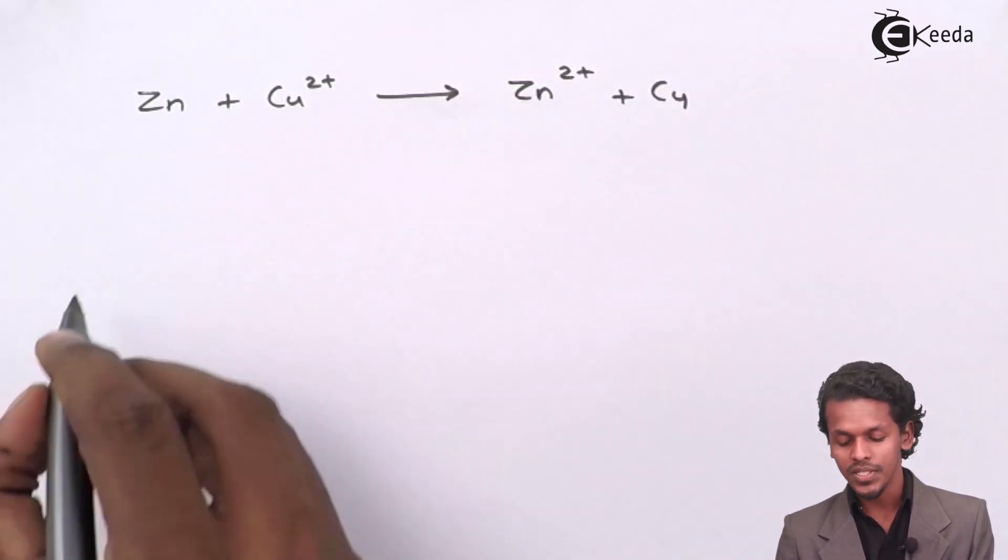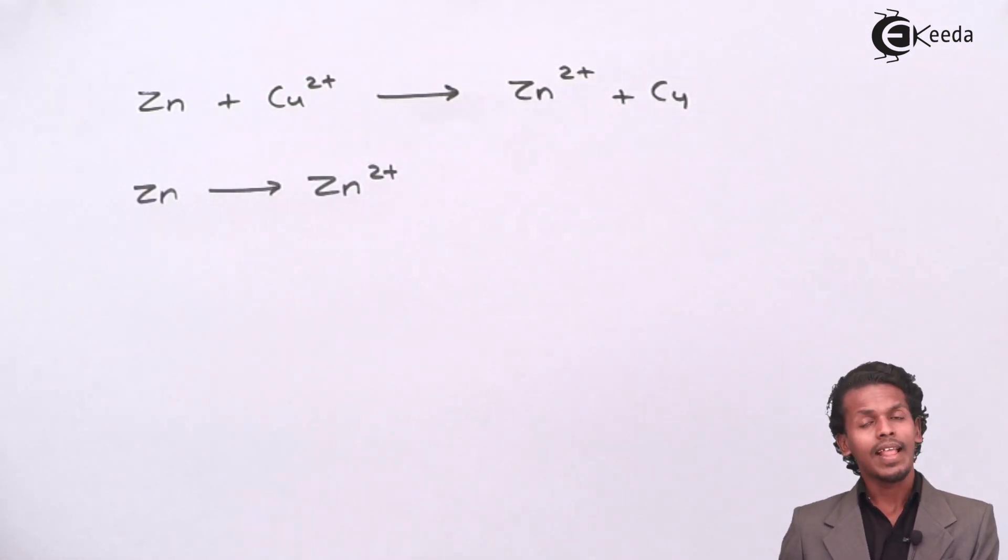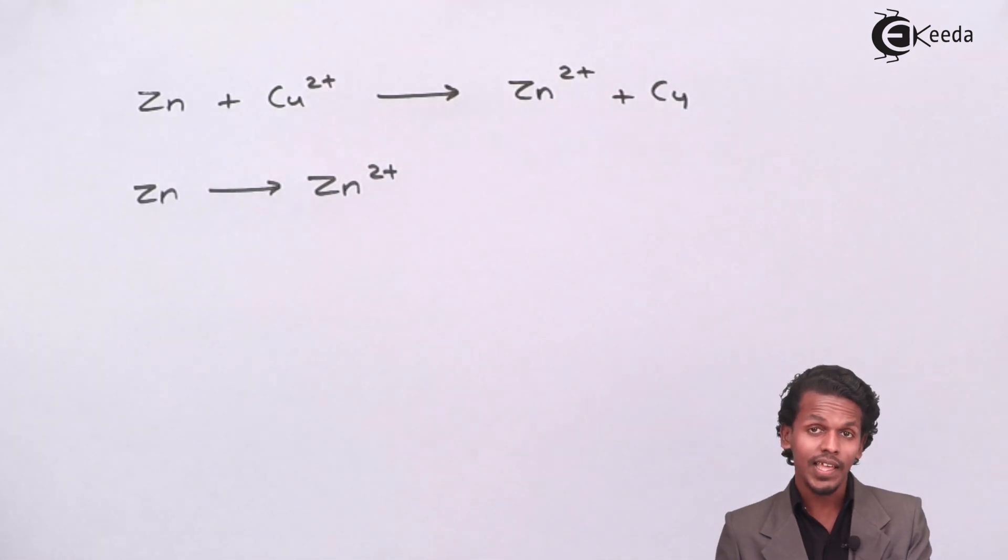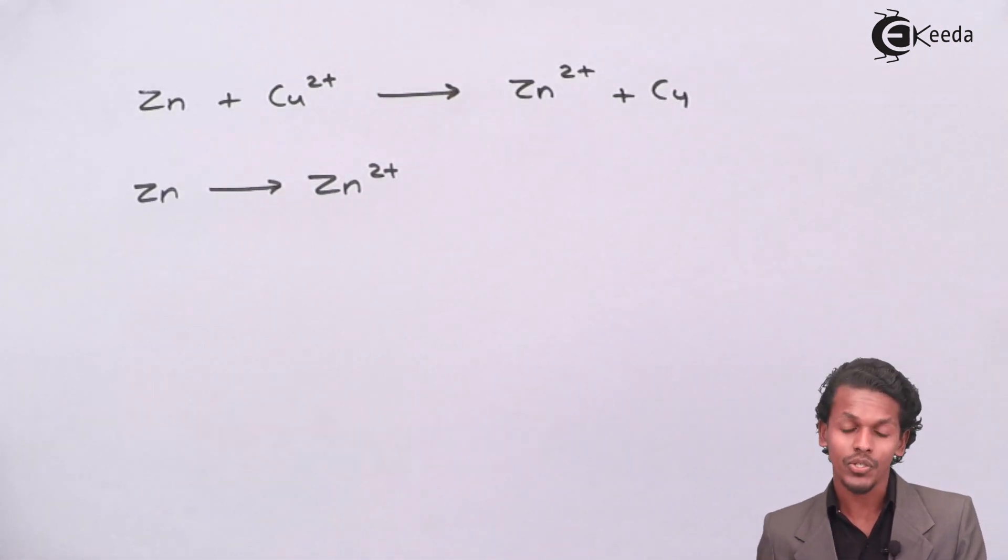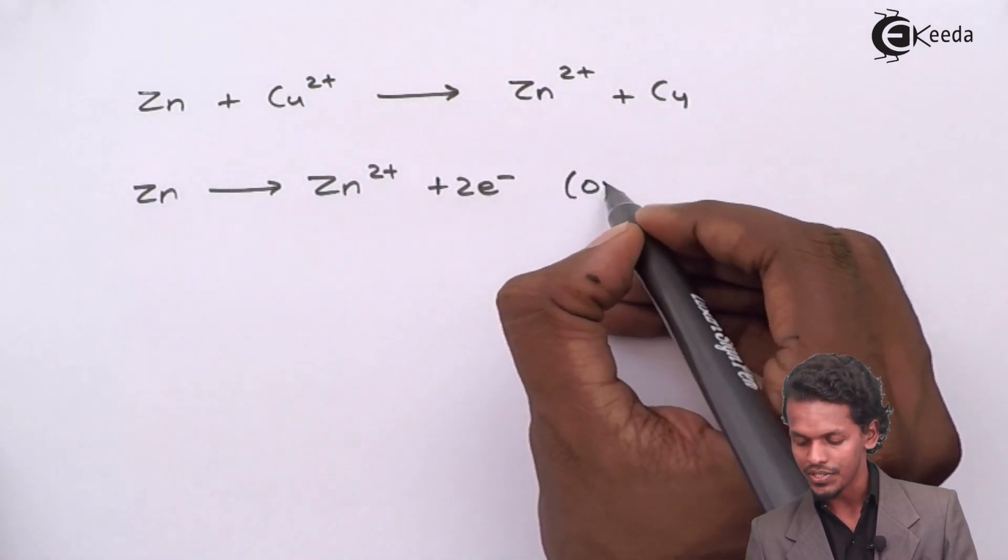This is only possible if zinc has lost two electrons. So this losing of two electrons is oxidation.